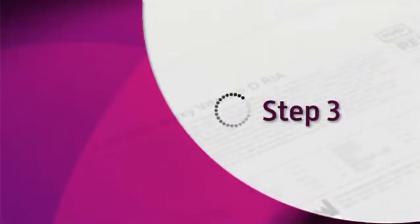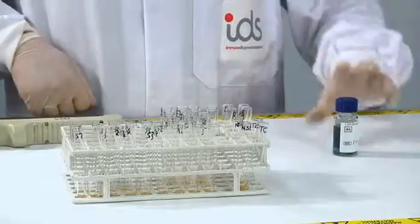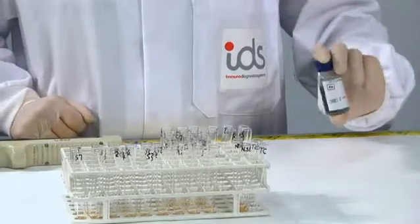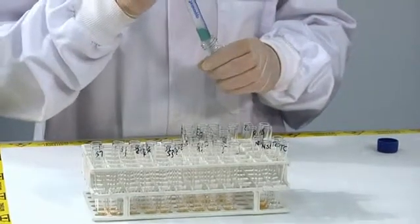Step 3: Add 200 microliters of primary antibody to all tubes except total count and NSP tubes.